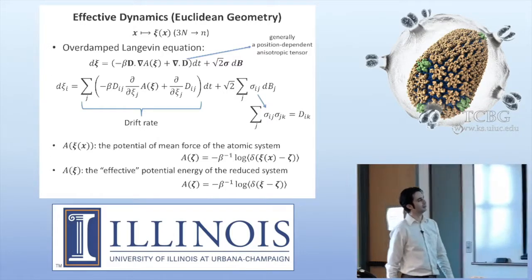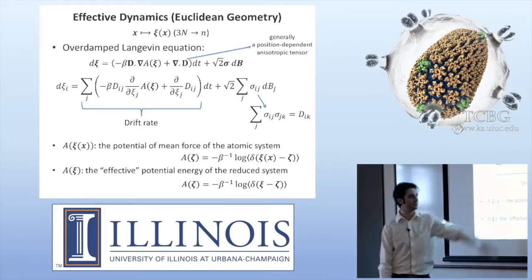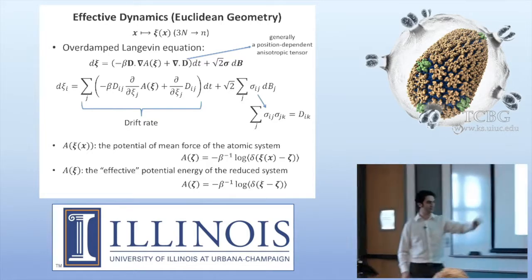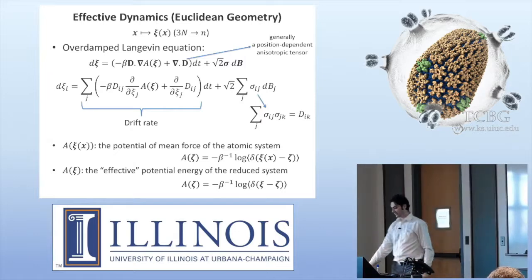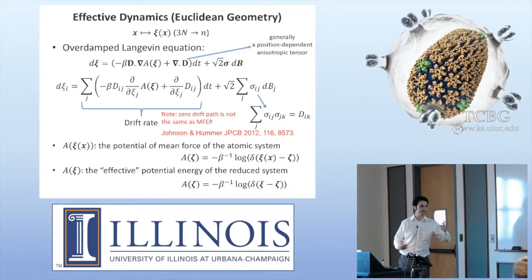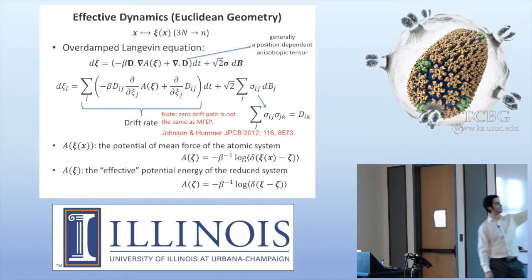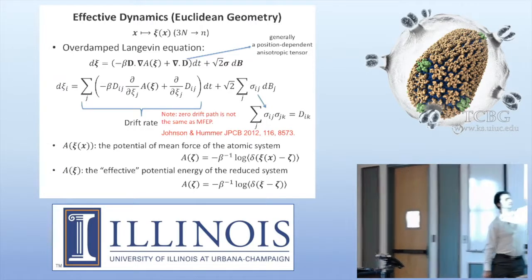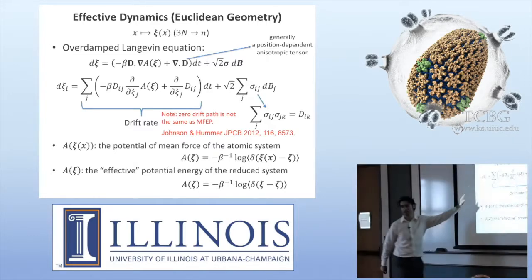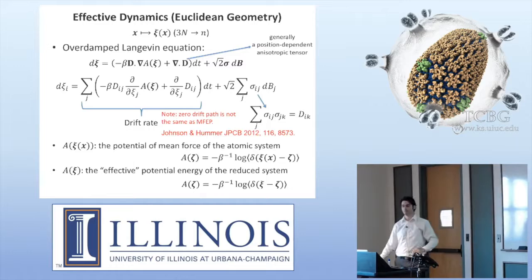This is basically just the standard way of writing the Langevin equation. This is called the drift term and that's the noise. This is basically the definition for the potential of mean force. The comments I made are that the string method would give you the zero drift, which makes this term zero along the path, whereas the minimum free energy path should be parallel to the free energy gradient. So your string method is parallel to this drift term, rather than parallel to the free energy gradient.